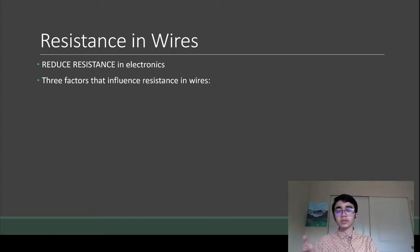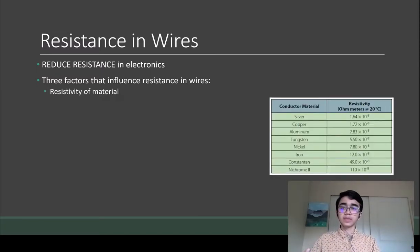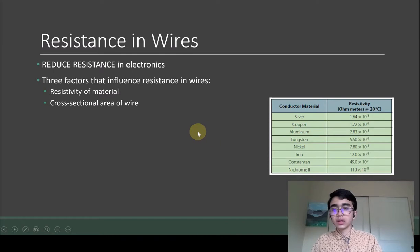When you talk about resistance in wires, there's three influencing factors. The first is the resistivity of the material - all of our wires we use are copper, so that's pretty standard. The second part is the cross-sectional area of the wire, so how thick the wire is.